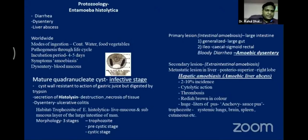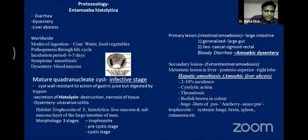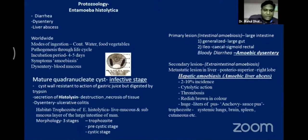An example is Entamoeba histolytica, which causes amoebiasis in the form of diarrhea and dysentery — a worldwide disease. The incubation period is four to five days. In dysentery you can observe blood and mucus in the stool. This parasite is oval-shaped, with the ability to form a motile trophozoite and a cyst form. The cyst is a dormant state; the mature quadrinucleate cyst is the infective stage.